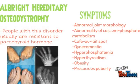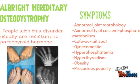Albright hereditary osteodystrophy is a disorder in which people are resistant to parathyroid hormone, causing low levels of calcium in the bone and blood. Low calcium in the blood can cause numbness, seizures, cataracts, dental issues, and muscle twitches and hand and foot spasms. This disorder also causes abnormal joint morphology, abnormality of calcium-phosphate metabolism, café-au-lait spots, gynecomastia, hyperphosphatemia, hyperthyroidism, obesity, and precocious puberty.